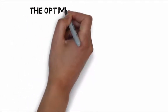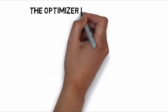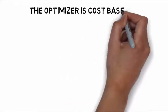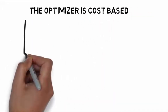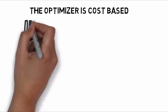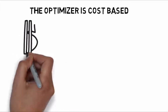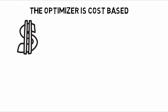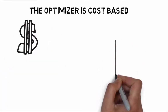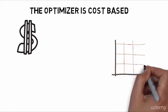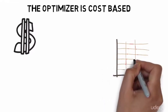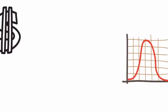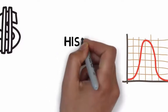The SQL Server Query Optimizer is a cost-based optimizer, and therefore the quality of the execution plans it generates are directly related to the accuracy of its cost estimates. During query optimization, SQL Server explores many plans, estimates their relative costs, and selects the most efficient one.